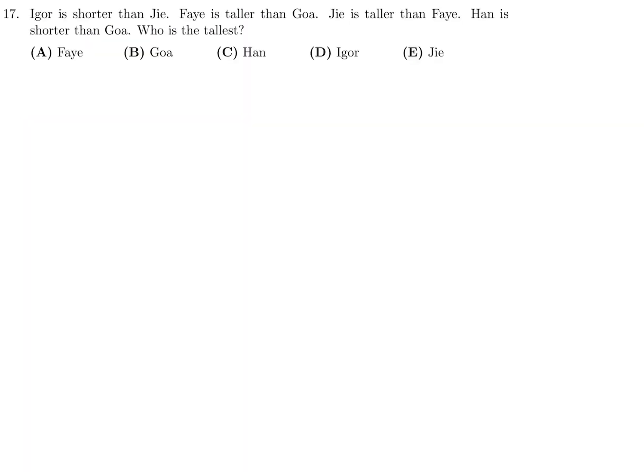Igor is shorter than Jie. Faye is taller than Goa. Jie is taller than Faye, and Han is shorter than Goa. Who is the tallest? So Igor is shorter than Jie. Jie is taller than Faye. Han is shorter than Goa. Faye is taller than Goa. And then Han is shorter than Goa. So it looks like the tallest is Jie, or J. Number 17, the answer is E.